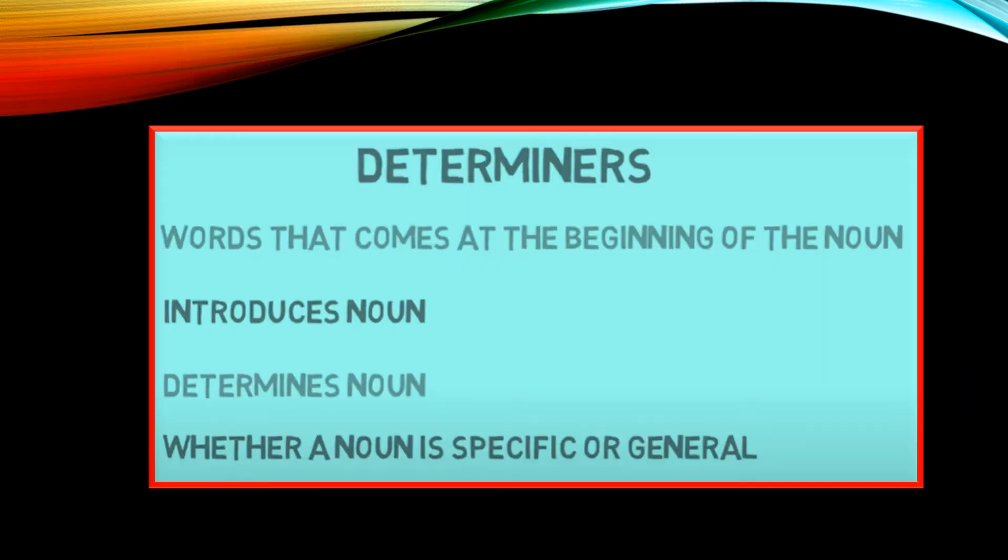Determiners are the words that come at the beginning of the noun. Children, you need to read the sentence and find out what are the words used before the noun. It normally introduces the noun or determines the noun. That means it denotes or points the noun whether a noun is specific or general. We get to know by looking at these determiners.